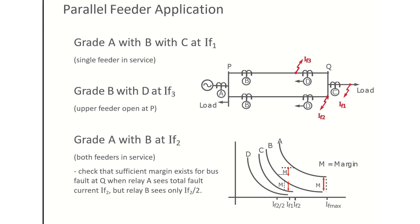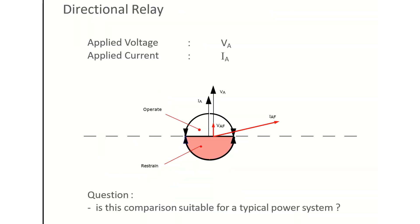The concepts explained in this session on directional overcurrent protection for parallel feeders should now be clear. From the next session onwards, we will focus on how to calculate the RCA, the relay operating range, what is the maximum torque angle, and how to calculate the forward and reverse operating direction for different makes of relay.